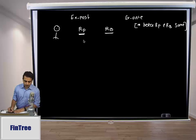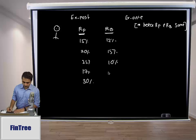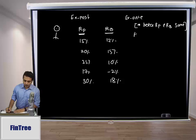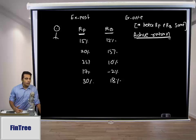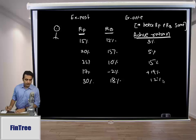Let's look at historical data for a few years. Say we have 15%, 20%, 25%, 17%, and 30% returns on the portfolio. On the benchmark there were 12%, 15%, 10%, minus 2%, and 18%. We calculate a number called active return — or alpha, used interchangeably when beta is the same. So active return is 3%, 5%, 15%, 19%, and 12%.